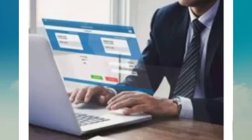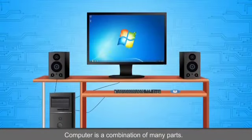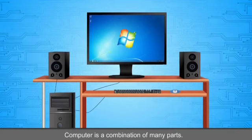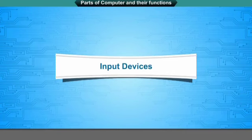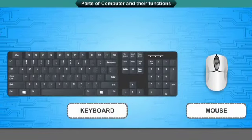Very soon you will see me everywhere in every house. On the basis of the chapter we can say, a computer is an electronic device and it is a combination of many parts. Parts of a computer are classified as input devices.